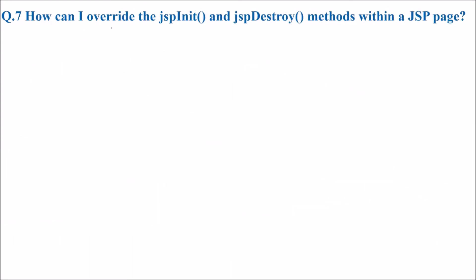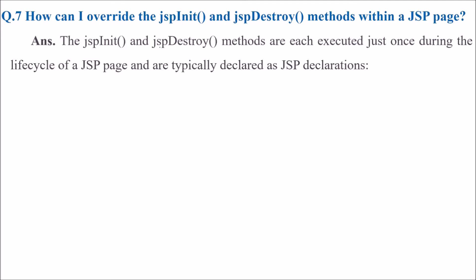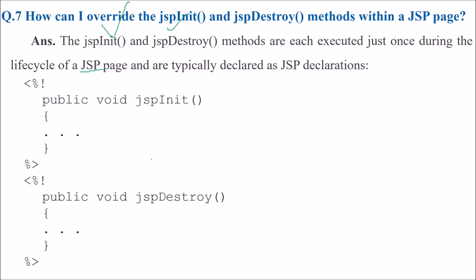How can I overwrite JSP init and JSP destroy within a JSP page? These methods are each executed just once during the lifecycle of the JSP page and are typically declared as JSP declarations. In the syntax, you use the percent-exclamation bracket, and inside this you have a function called JSP init, and similarly JSP destroy in the same fashion.